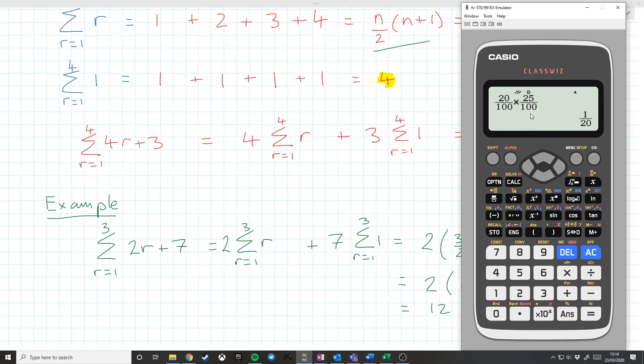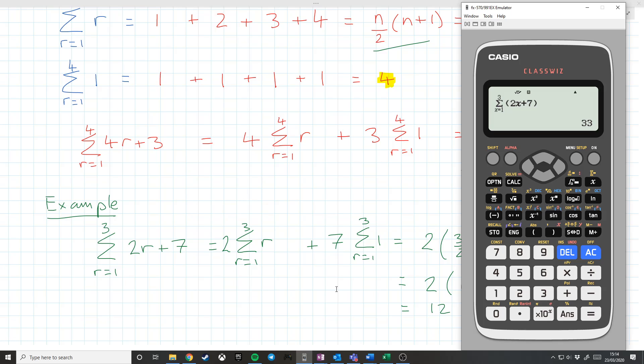At this point, I'm actually going to show you that you can check your answers to all of these using the calculator, using the summation notation. So I'm going to check my answer to this. And this time, you have to use x, because that's the dummy variable. So I've got 2x plus 7, and that's going from 1 to 3. And I get 33, as I had expected.